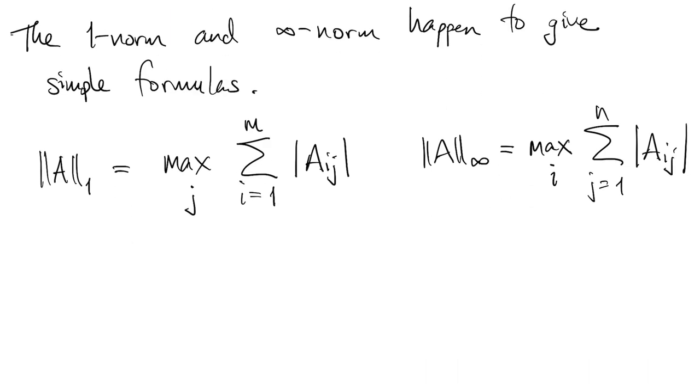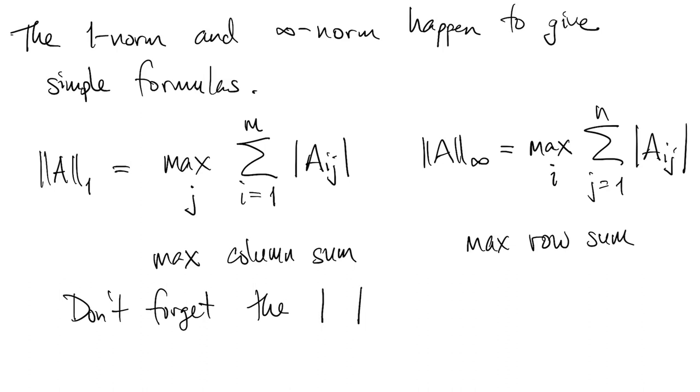So we could say that the one norm is the maximum column sum, and the infinity norm is the maximum row sum, after taking magnitudes. And you can kind of remember this because the one is tall and skinny, so you sum down the columns. The infinity symbol is short and wide, so you sum from left to right.